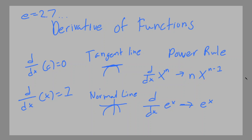We're going to go over tangent and normal lines. A tangent line is basically the derivative — it's the instantaneous slope. The normal line is perpendicular to the tangent line. We'll also cover the power rule: for x to the nth power, move n to the front and subtract 1 from the exponent. And the derivative of e^x is always e^x.